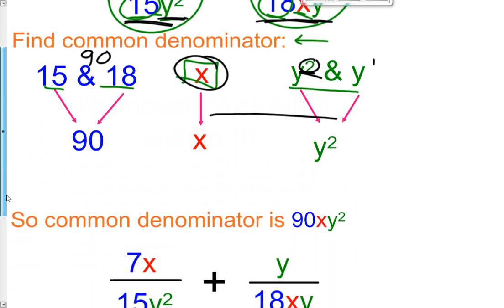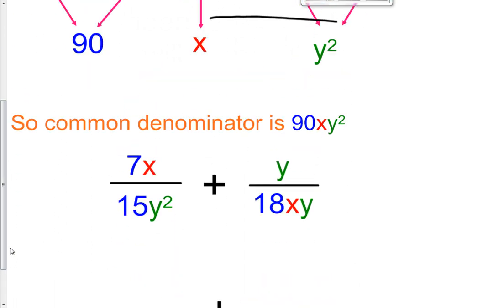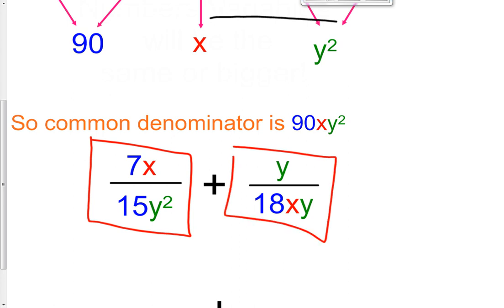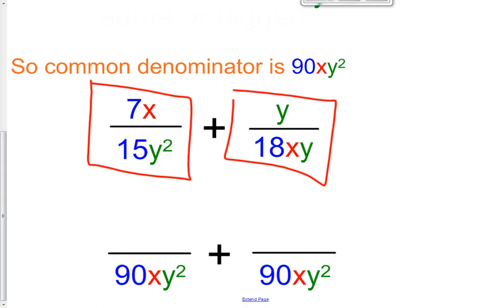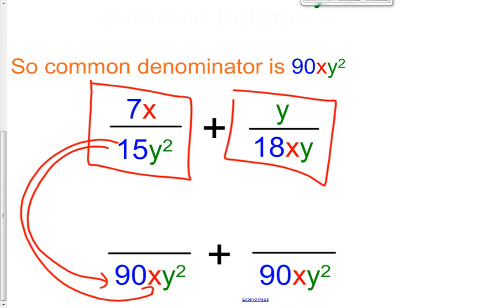Here's our original question plus the second fraction, and we said the common denominator is 90xy². Now we have to make an equivalent fraction by multiplying the numerator by the same thing we multiply the denominator by. 15 times 6 gets us 90, and we have to multiply by x because there were no x's to get to one x, and y² to y² requires no extra multiplication. So we multiply by 6x, and 6x times 7x is 42x².